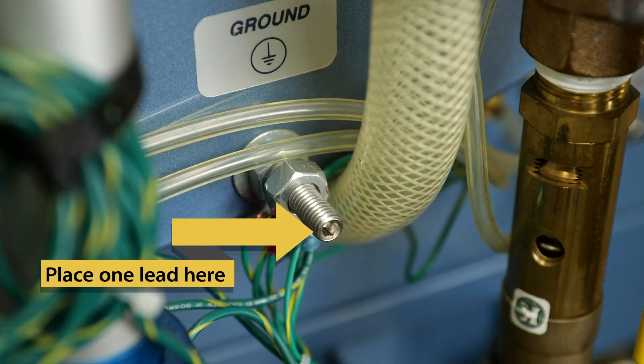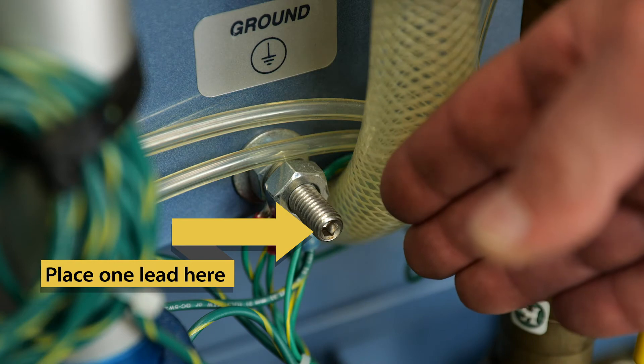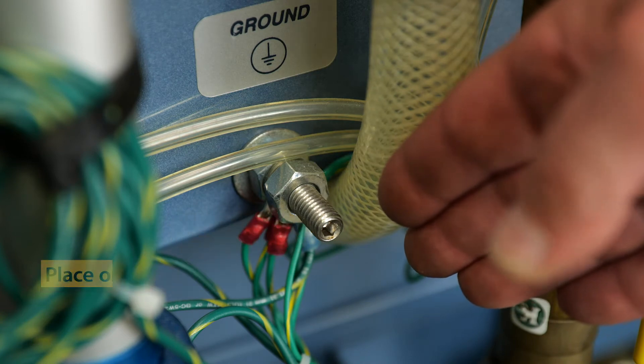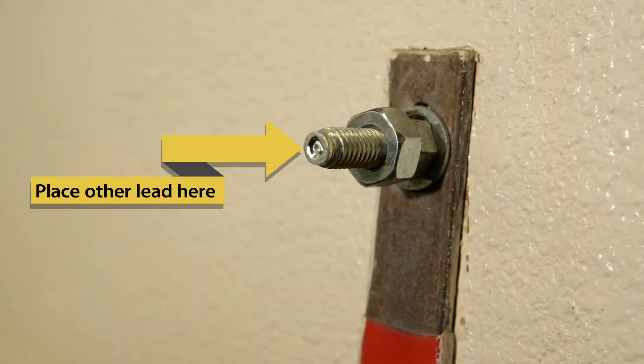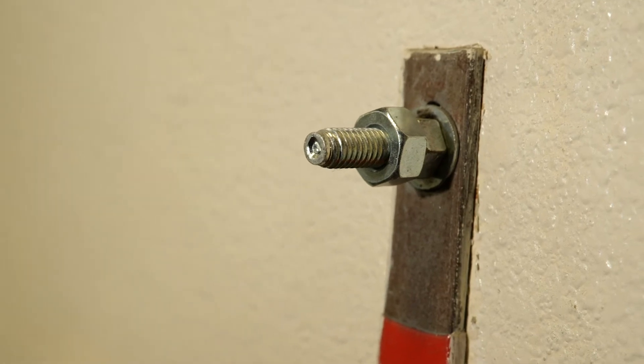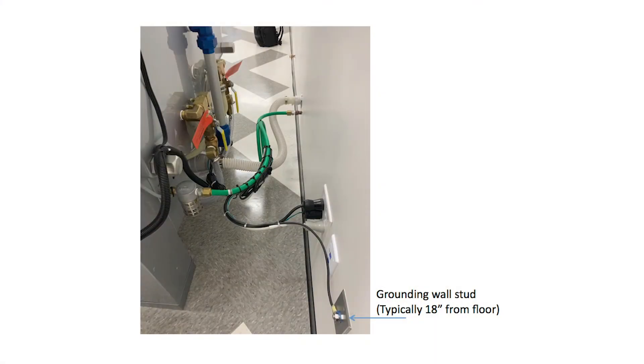To check the chamber ground on a chamber without the test point kit, you want to measure with your ohm meter between the stud on the back of the chamber and the stud coming out of your wall. You will measure between those two studs, and you should have less than one ohm.